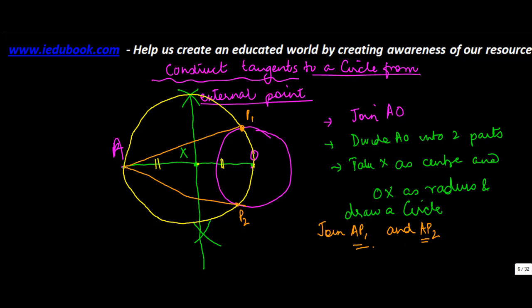AP1 and AP2 are the two tangents and you can verify this. Draw a radius here and measure this angle, draw a radius here and measure this angle. Both of them will be 90 degrees each.